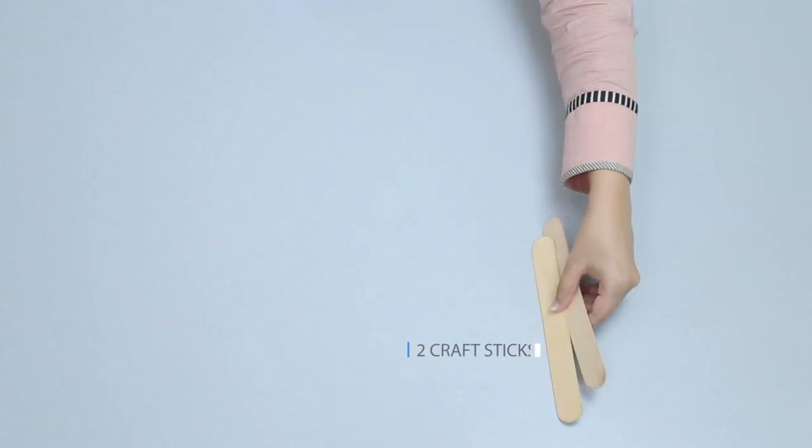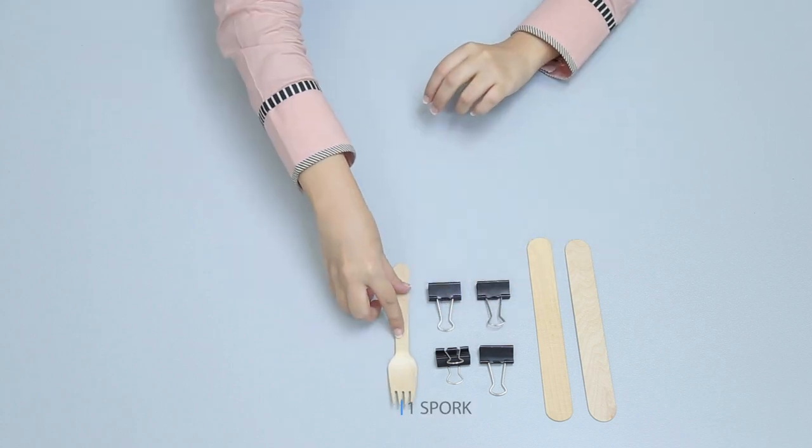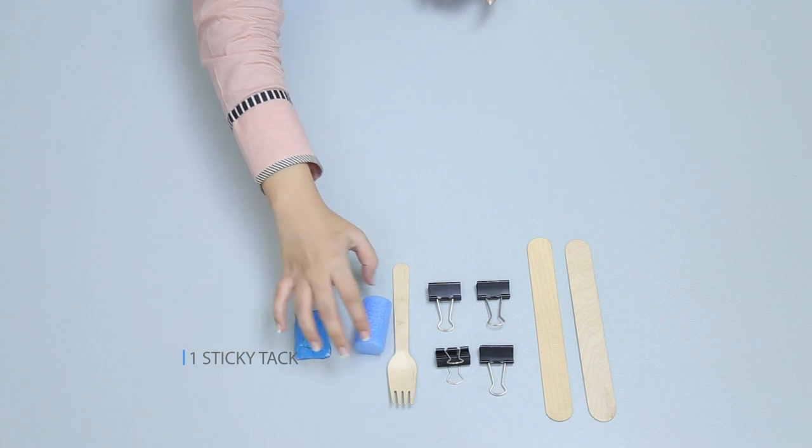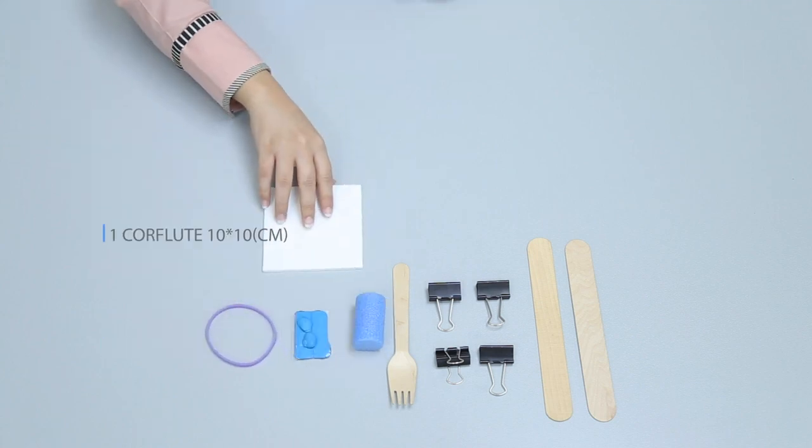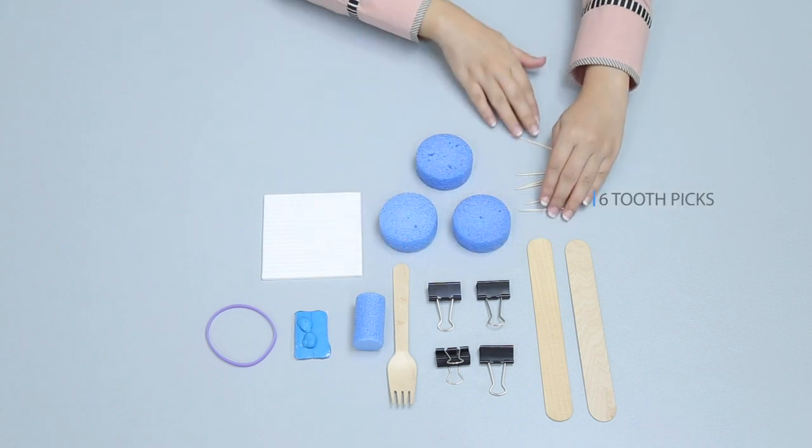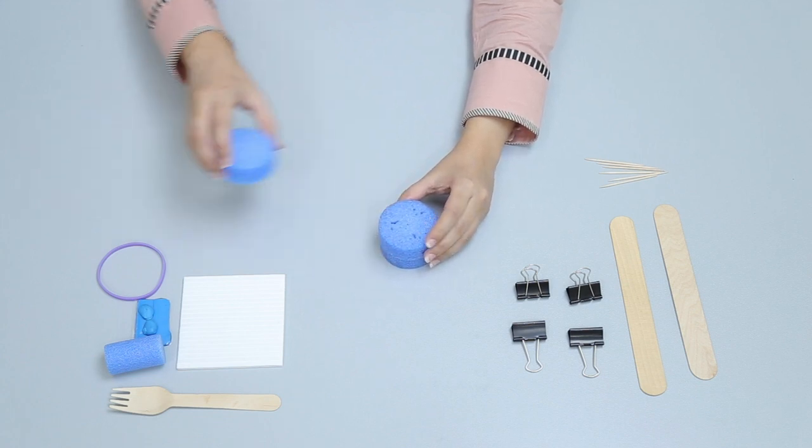Let's make a type of lever with two craft sticks, four fold back clips, one spork, one foam cylinder, one sticky tack, one rubber band, one corrugated flute 10 by 10 centimeter, three foam wheels, and six toothpicks. Join together three foam wheels with toothpicks to make a large foam cylinder.